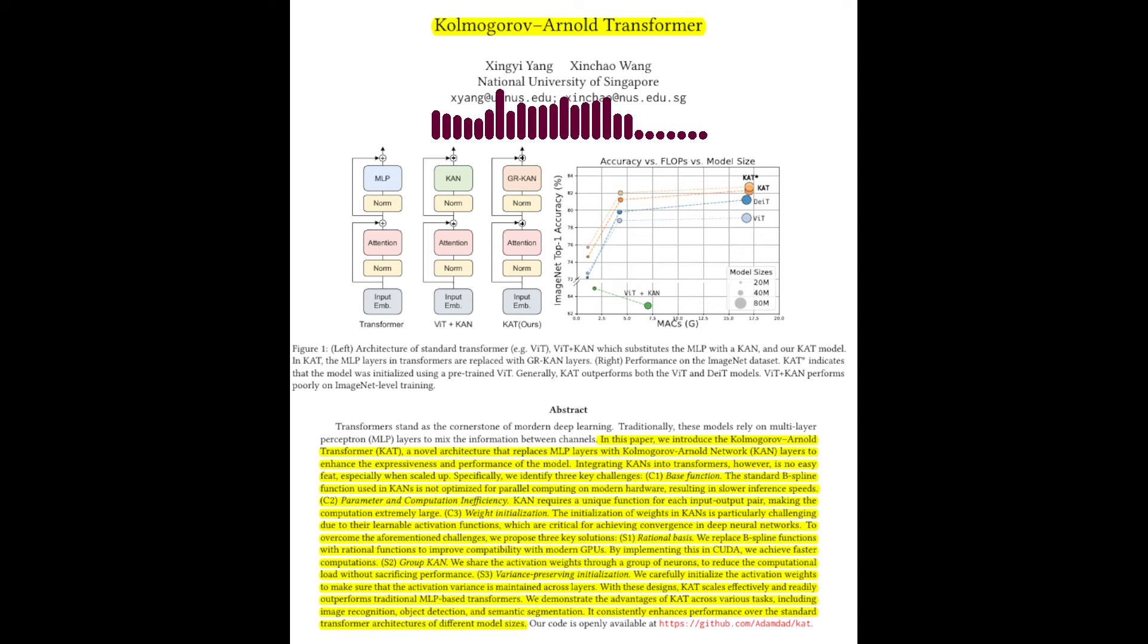The paper claims that KAT outperforms traditional MLP-based transformers. What evidence do they provide to support this claim? The paper presents experimental results on various vision tasks, including image recognition, object detection, and semantic segmentation.